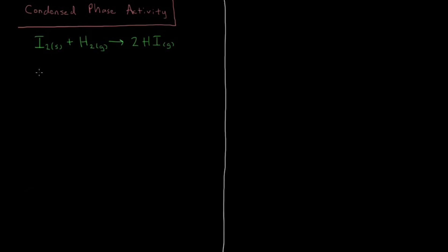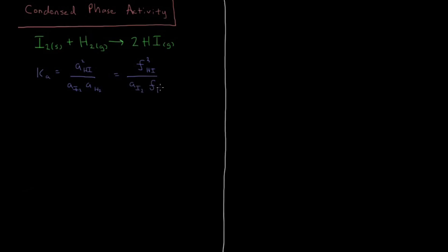We can define a thermodynamic equilibrium constant for this reaction: Ka equals the activity of HI squared — our product to the power of its stoichiometric coefficient — divided by our reactants, which are the activity of iodine times the activity of H₂, each with a coefficient of one. For gases, the activity is defined as fugacity divided by standard fugacity, which is one bar, so we can replace activity with fugacity for gases. This gives us fugacity squared of hydrogen iodide divided by the activity of iodine times the fugacity of H₂.